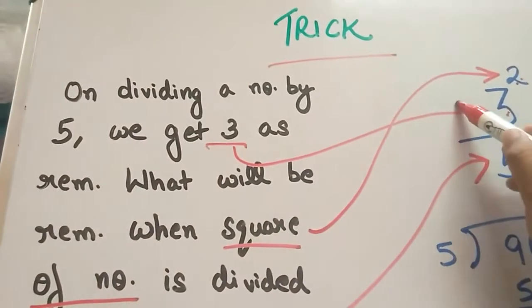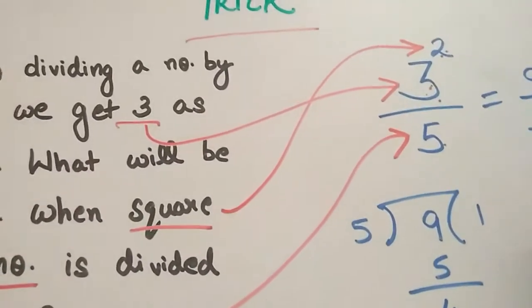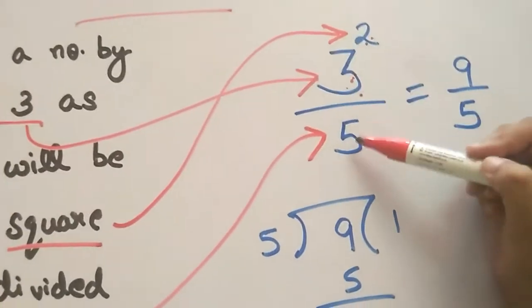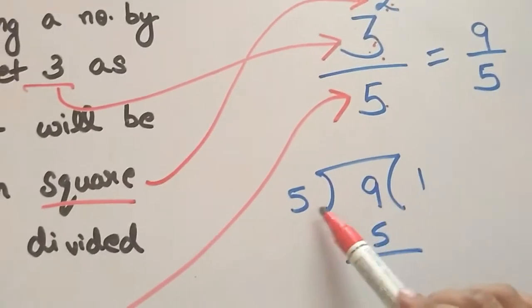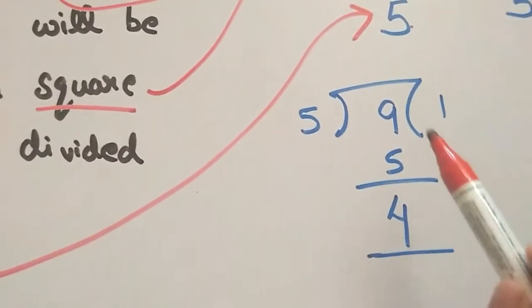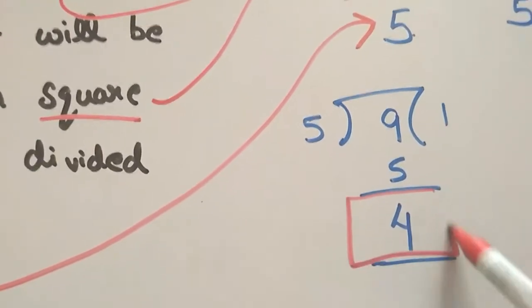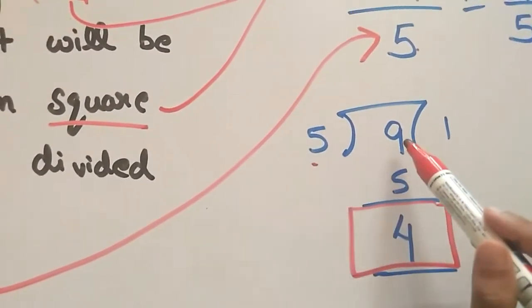This is the trick actually - just divide and get the remainder. 3 into 3 is 9. 9 divided by 5, and the remainder you get is 4.